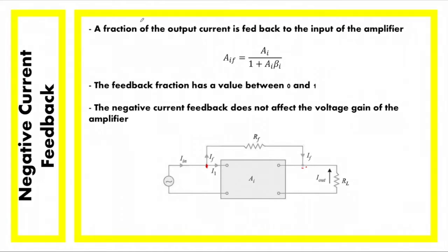The beta I here is what we consider the feedback fraction, and it is also present in the negative voltage feedback — they are all the same quantity. It is the gain of the feedback system that is multiplied to the output energy to result in the feedback energy. In this case, the feedback energy is IF, or the feedback current.